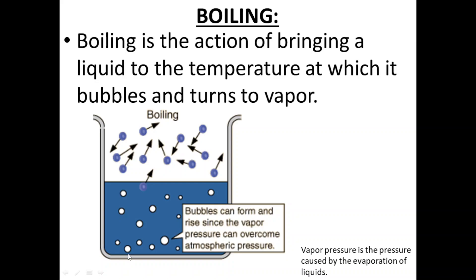These bubbles expand and increase in pressure — that's the vapor pressure. Eventually, they increase to such pressure that they become greater than the atmospheric pressure pushing down on the liquid. When these bubbles form and their pressure overcomes atmospheric pressure, they go up to the top, cooler water comes down to the bottom, and more bubbles form. This process repeats in a convection current until all the liquid is forming bubbles that rise to the top and turn into vapor, escaping the surface.